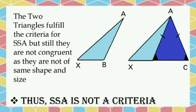Yet, it is not a criteria of congruency. This is because when we separate both of these triangles, we will observe that they are not of the same shape and size. Hence, SSA is not a criteria of congruency.